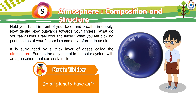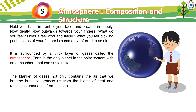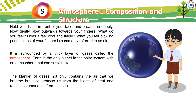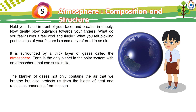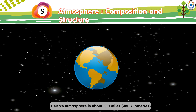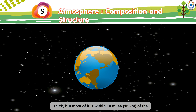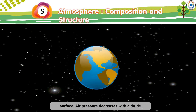Brain Tickler: Do all planets have air? The blanket of gases not only contains the air that we breathe but also protects us from blasts of heat and radiation emanating from the sun. Earth's atmosphere is about 300 miles (480 kilometers) thick, but most of it is within 10 miles (16 kilometers) of the surface.